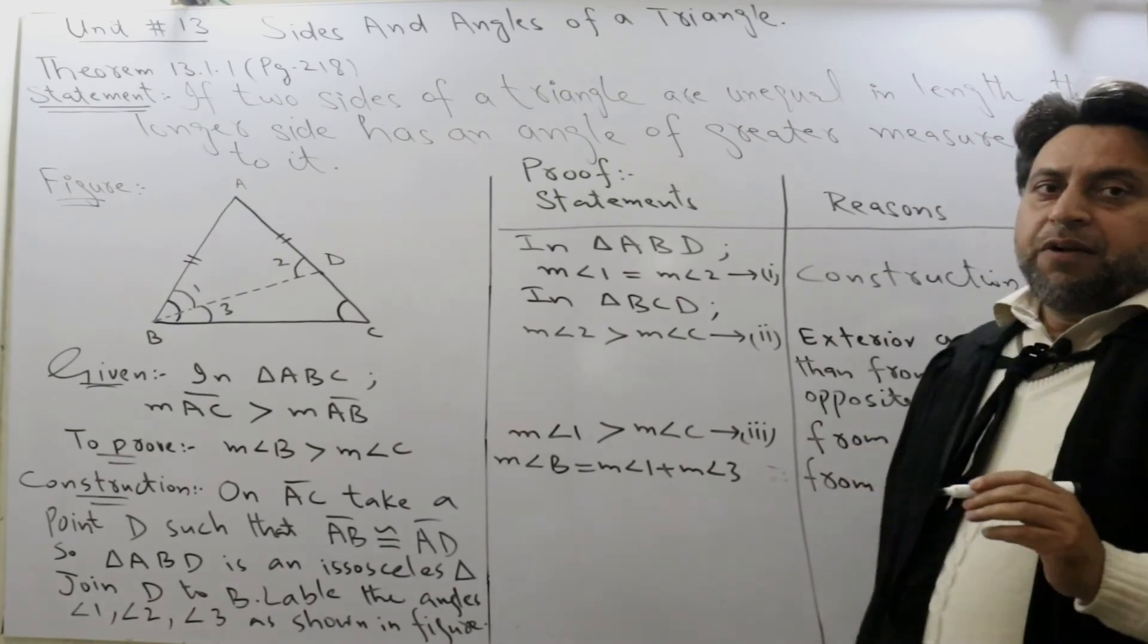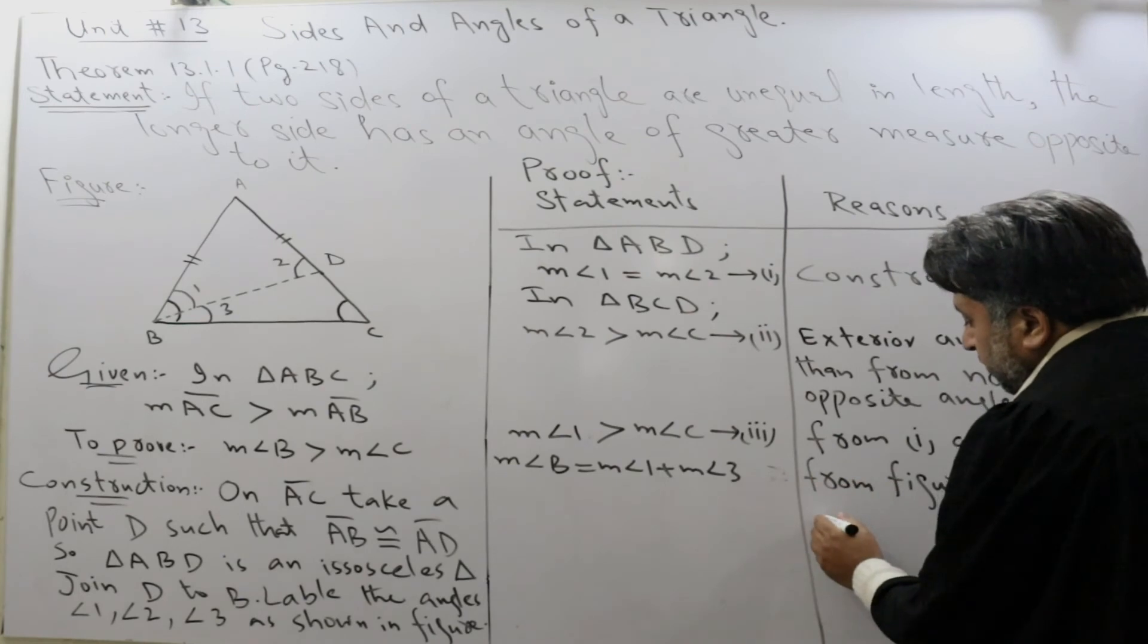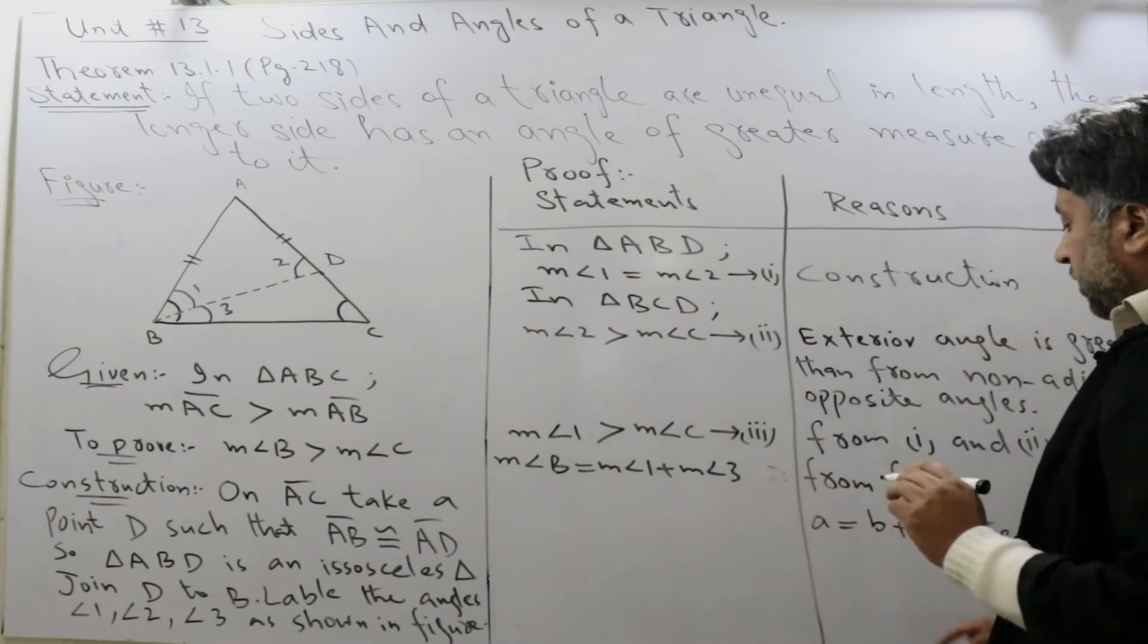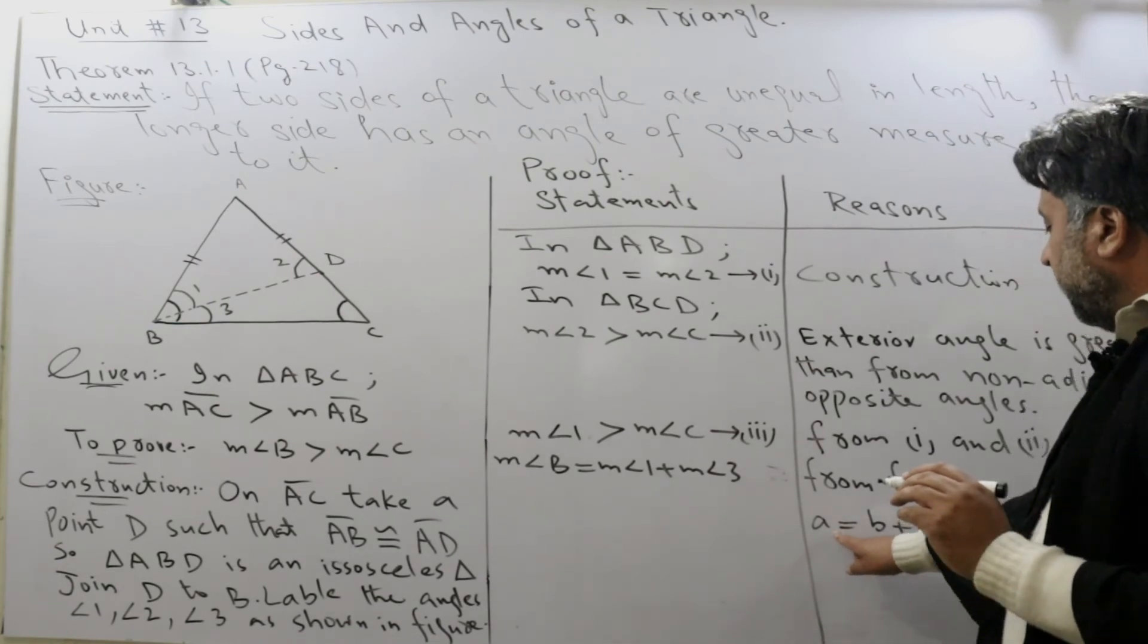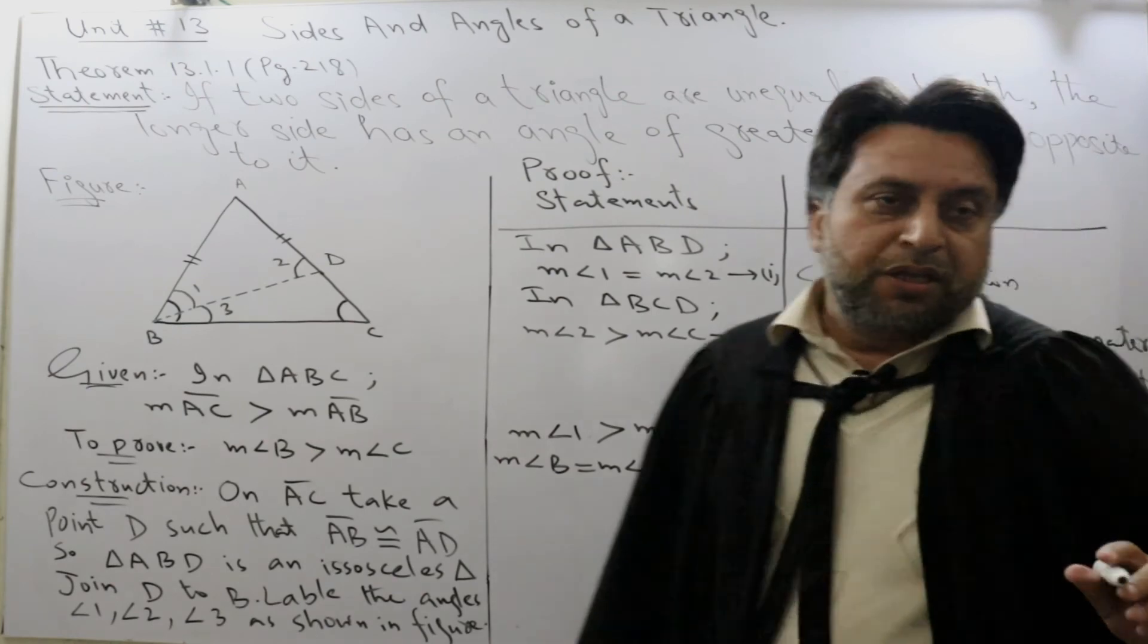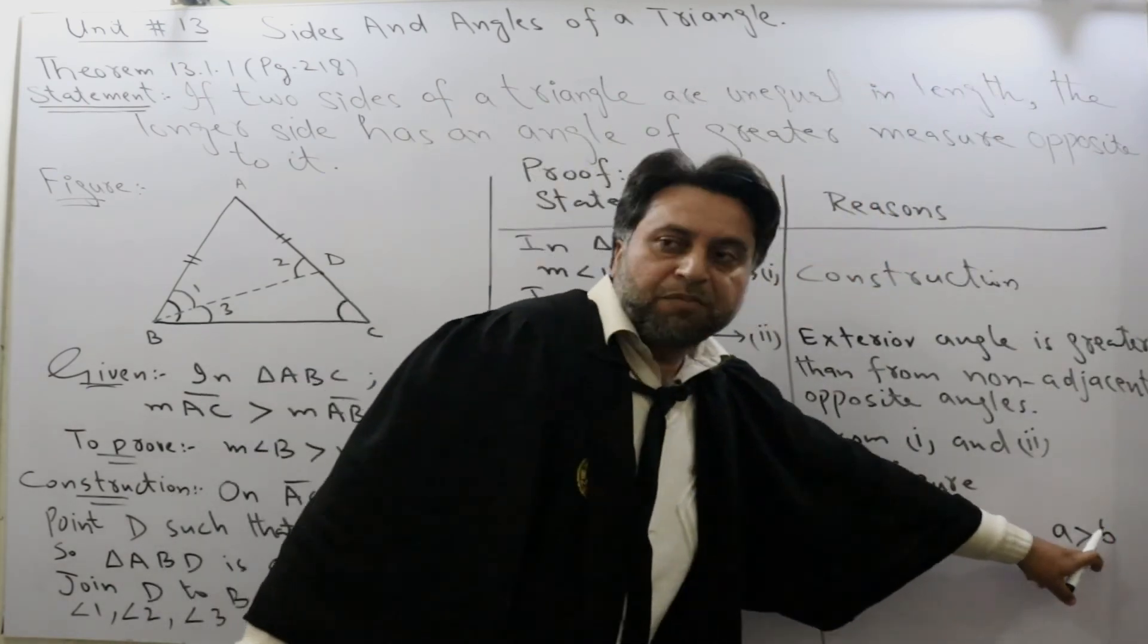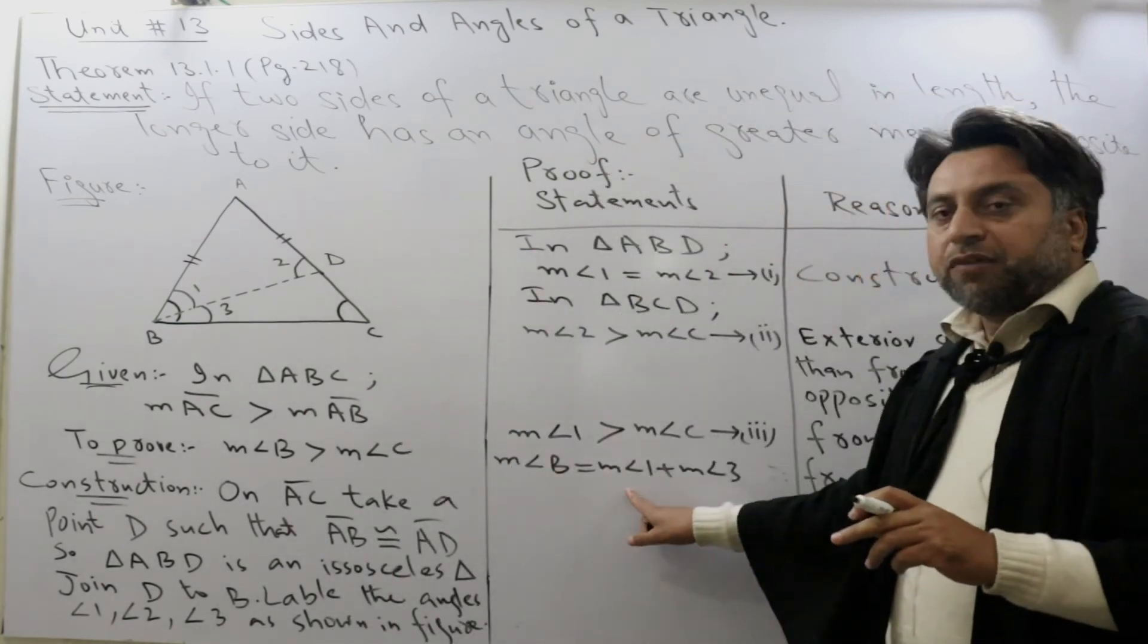From figure, we have the property that if A is equal to B plus C, a property of real numbers, then A is greater than B. According to this property, it means that angle B is greater than angle 1.